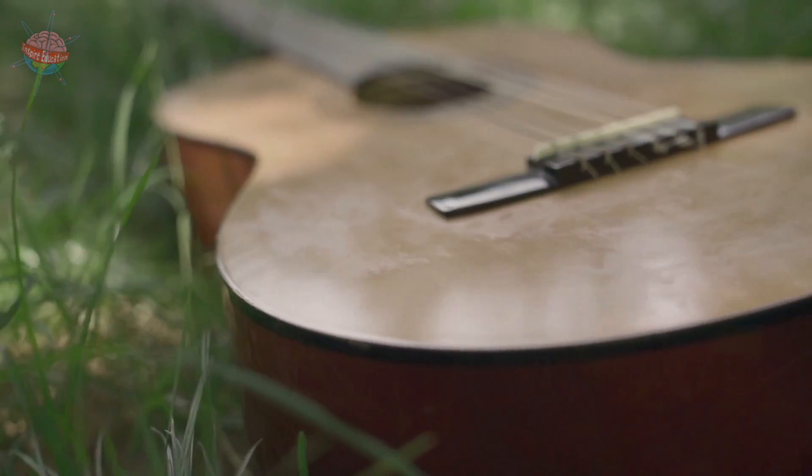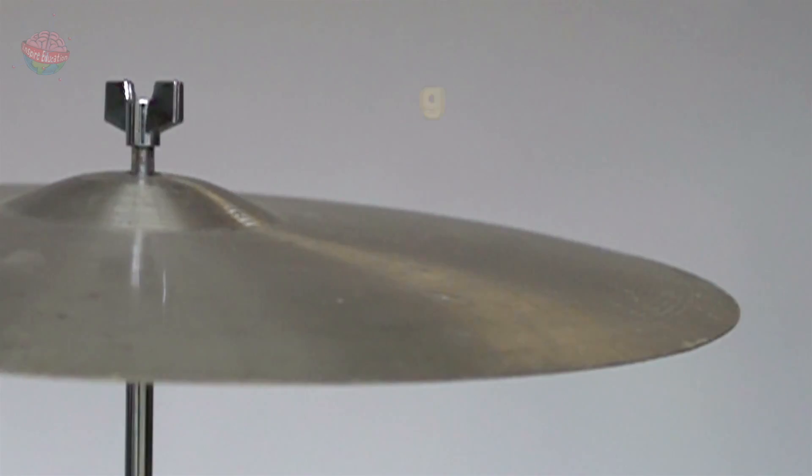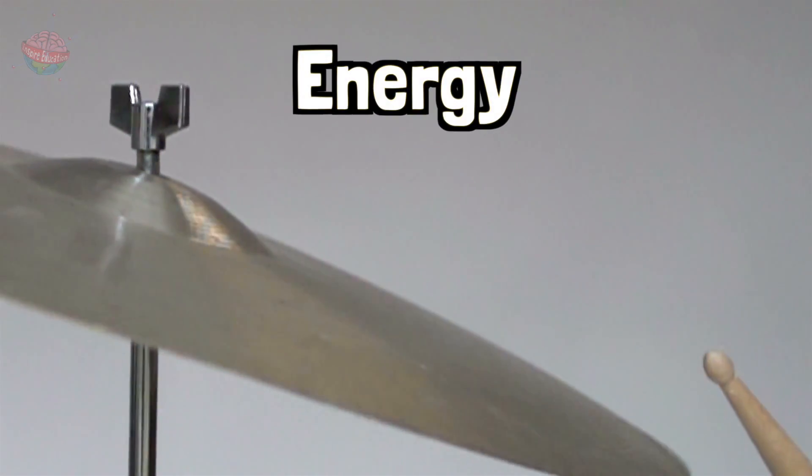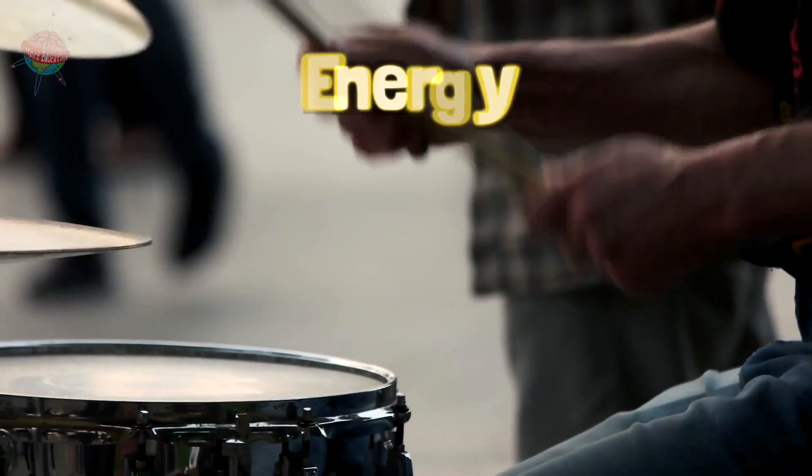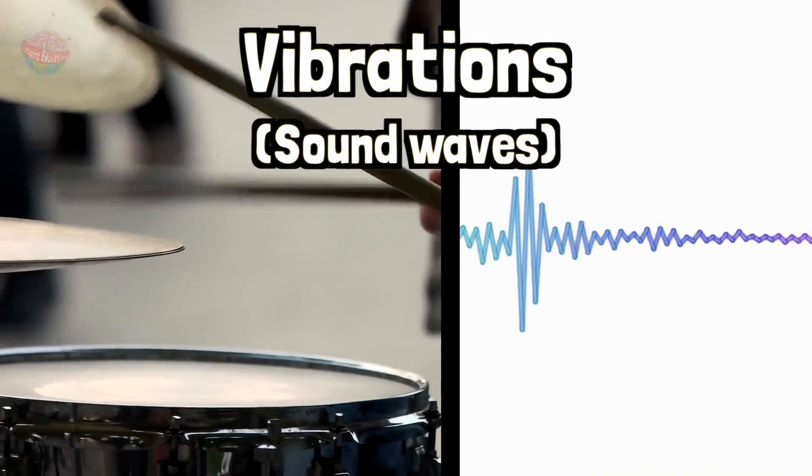Objects don't usually start vibrating on their own. They need something or someone to give them energy. When we bang a drum, we turn the energy of our movement into vibrations and sound waves.